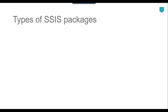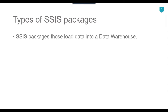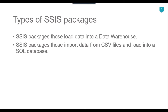There are different types of SSIS packages and the method to do unit testing of each package will be different according to the requirement. For example, we can have an SSIS package that loads data into a data warehouse, and testing of that package will be done differently because we need to make sure data is loaded correctly into the dimension table and the fact table. A second type of package can be one that imports data from CSV files and loads it into a SQL database.